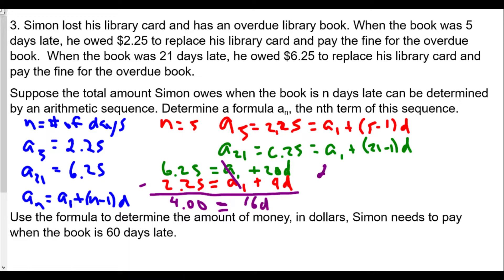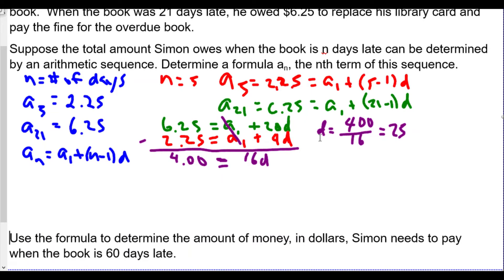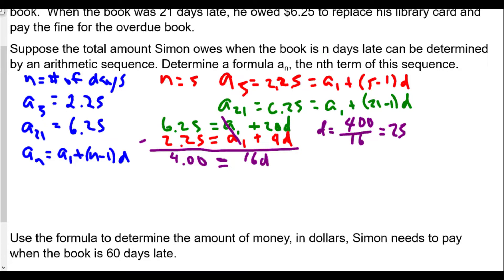That means d equals $4.00 divided by 16. I'm going to work in cents to make it a little easier — 400 cents divided by 16 equals 25. So d equals 25 cents.